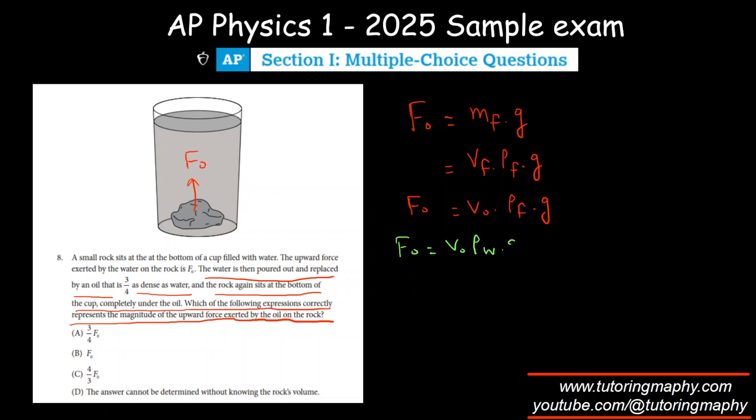In situation number two, V_naught remains the same because that's the same object. Rho is three-fourths as dense, so three-fourths as dense means its density is three-fourths of rho of water.